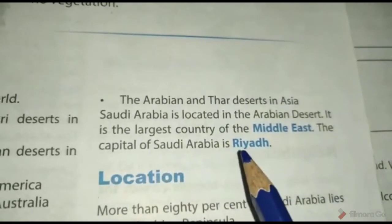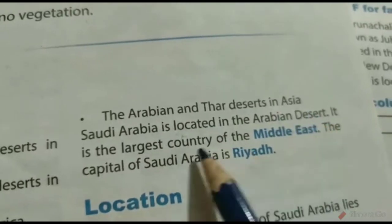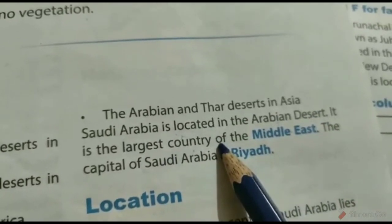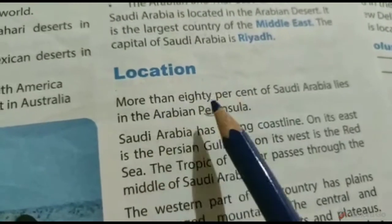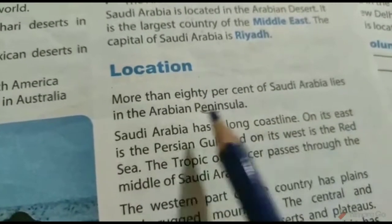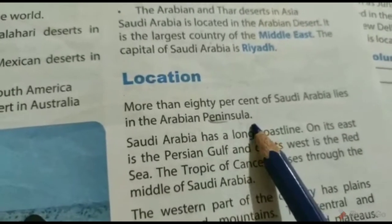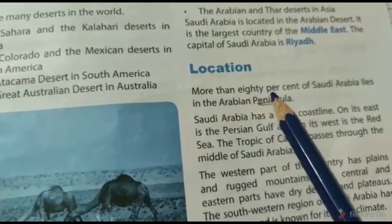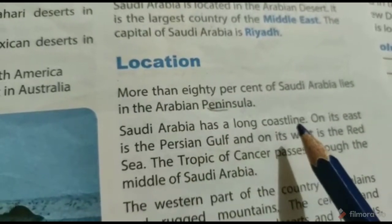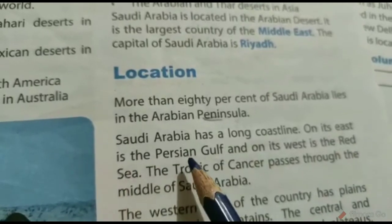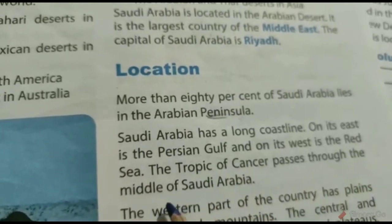The capital of Saudi Arabia is Riyadh. Moving to the next topic - location: more than 80% of Saudi Arabia lies in the Arabian Peninsula. Peninsula means an area of land surrounded by water on three sides. Saudi Arabia has a long coastline; on its east is the Persian Gulf and on its west is the Red Sea. The Tropic of Cancer passes through the middle of Saudi Arabia.